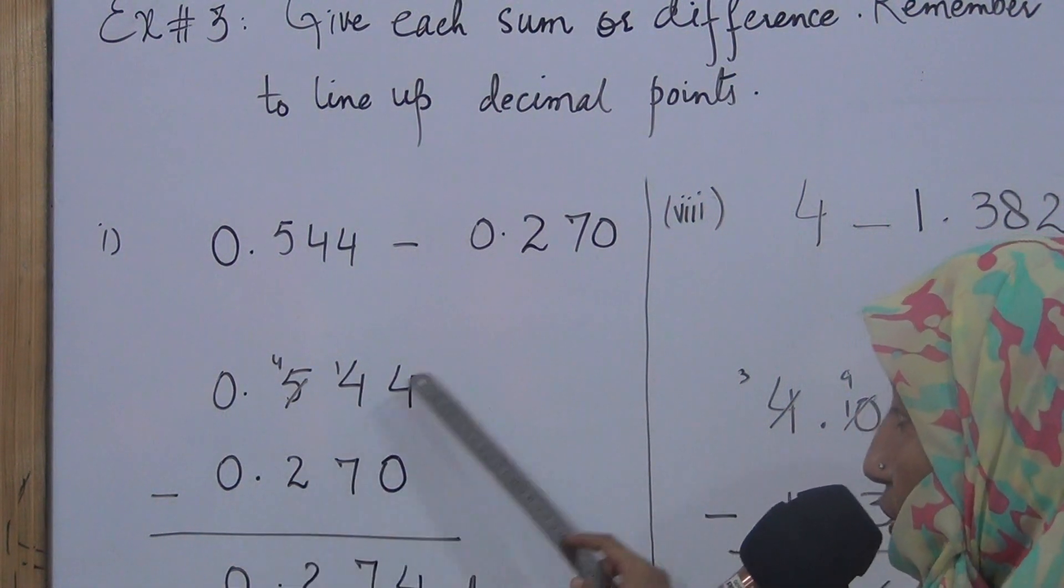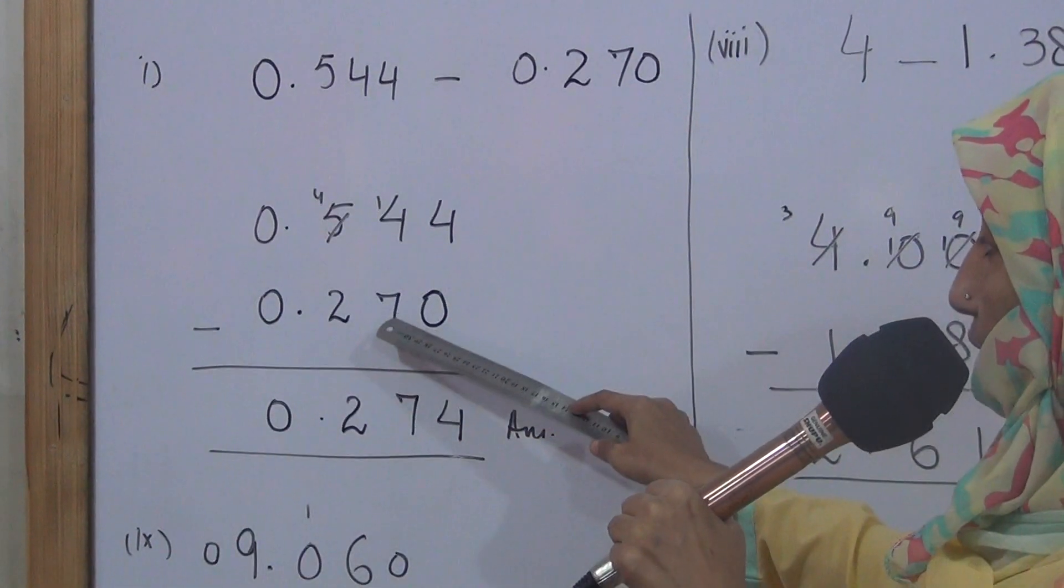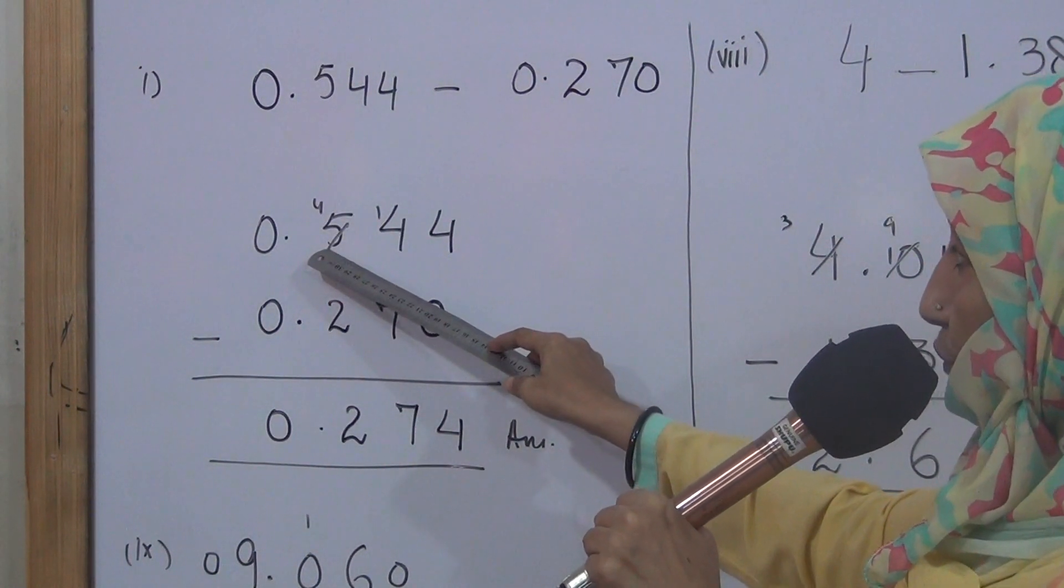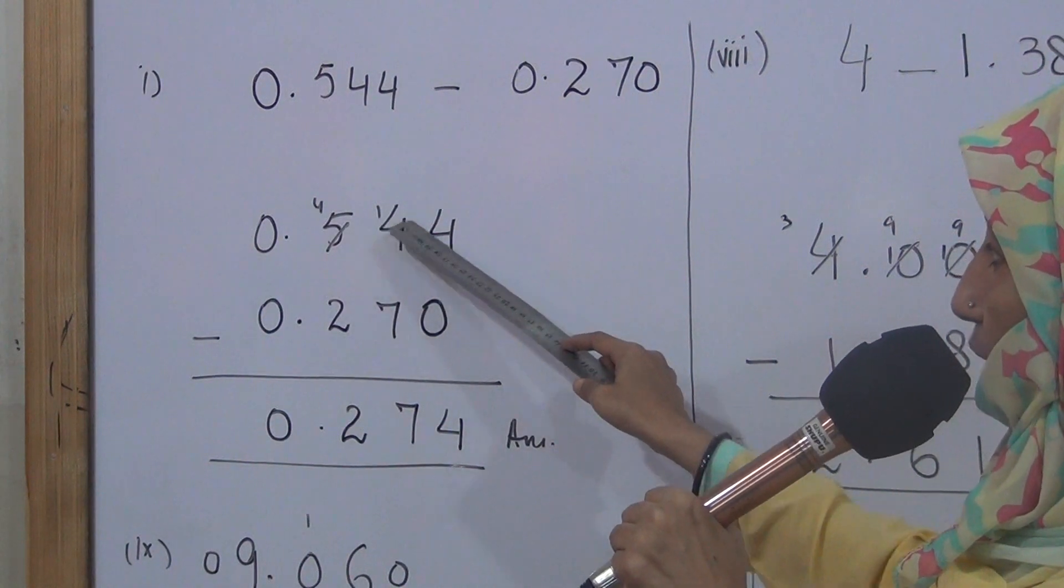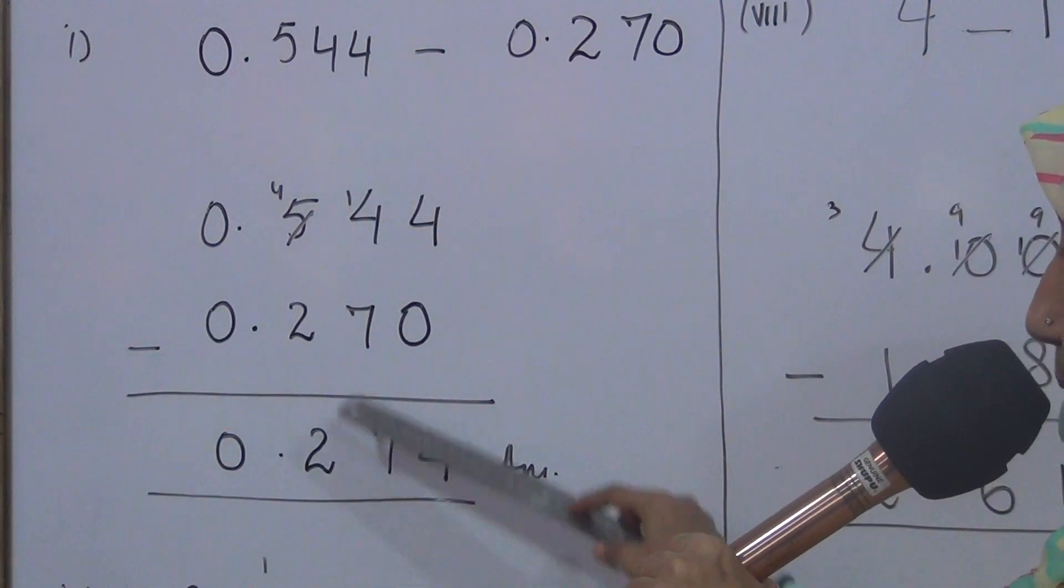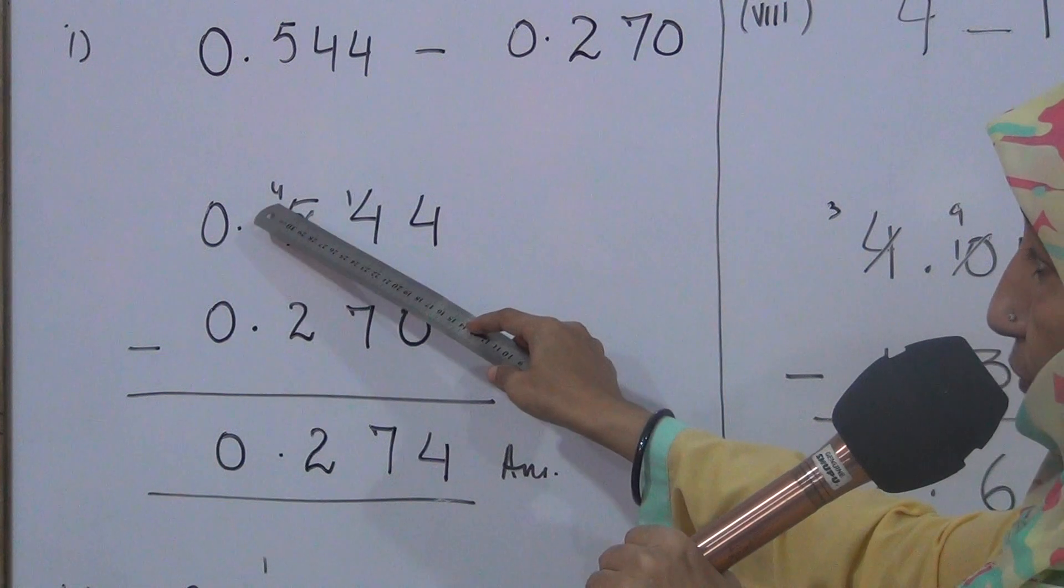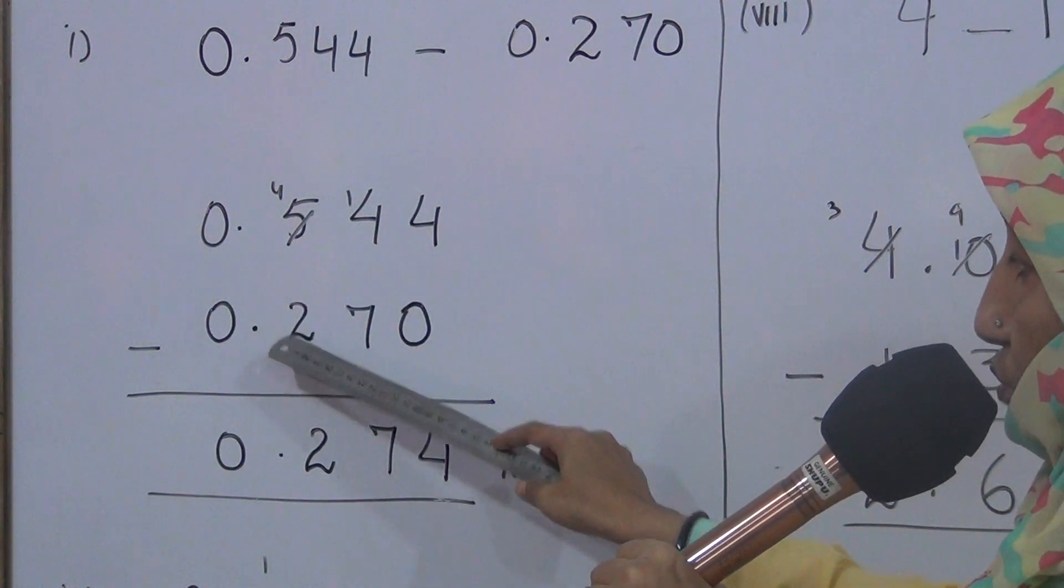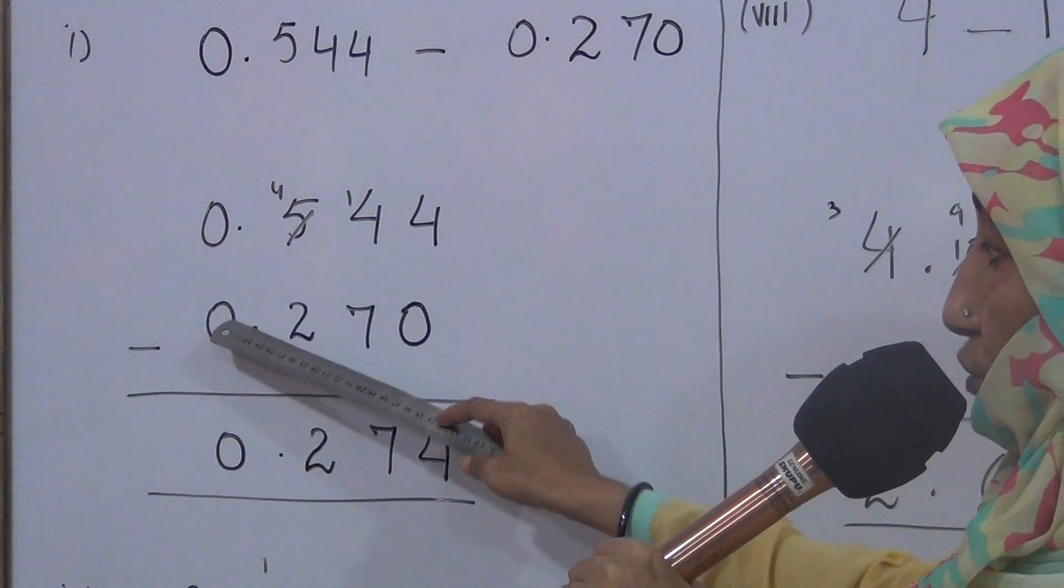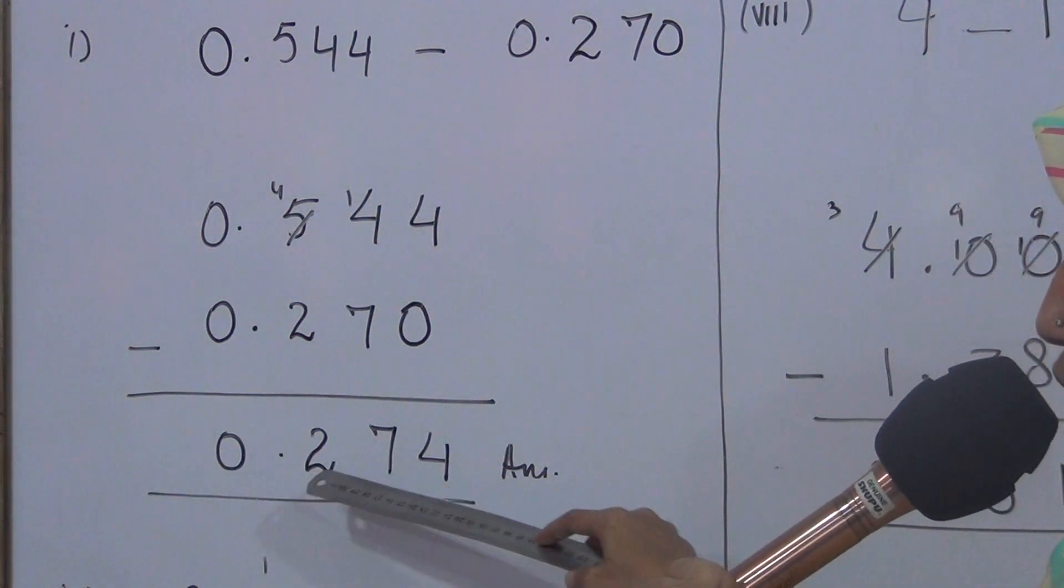Now do the subtraction. Four minus zero equals four. Four minus seven is not possible. So we have to borrow one from five. Five minus one leaves four. Now it is fourteen. Fourteen minus seven equals seven. Four minus two equals two. Point below point. Zero minus zero equals zero.